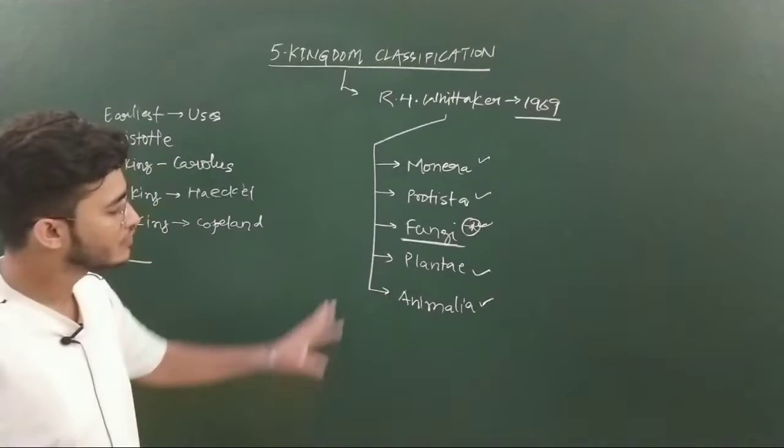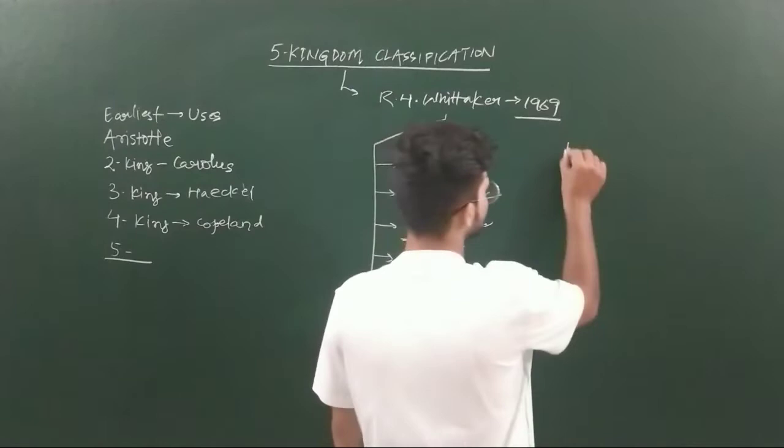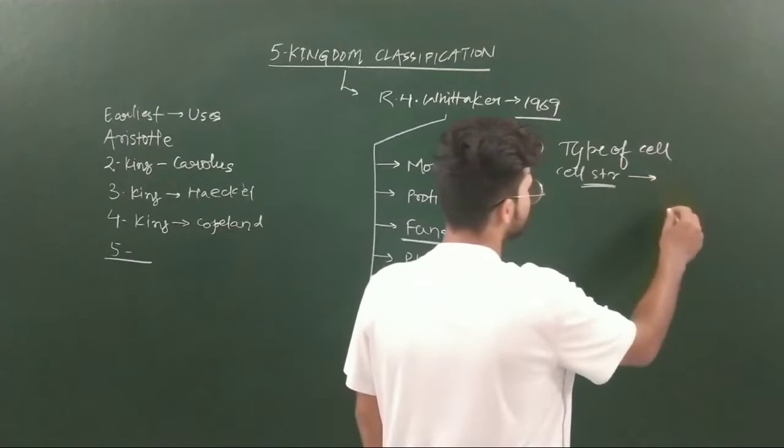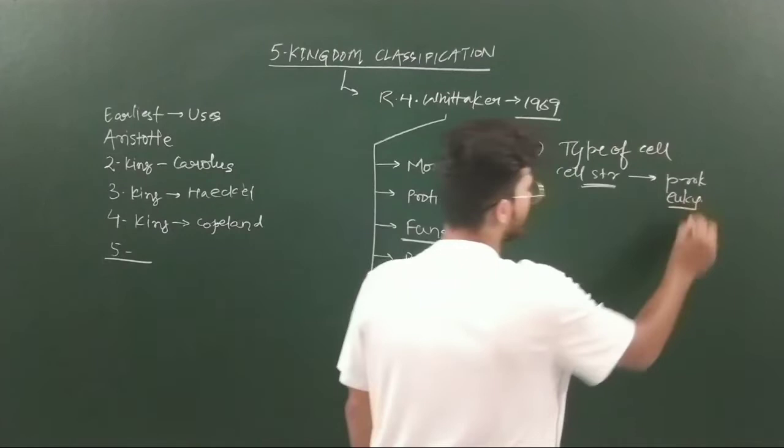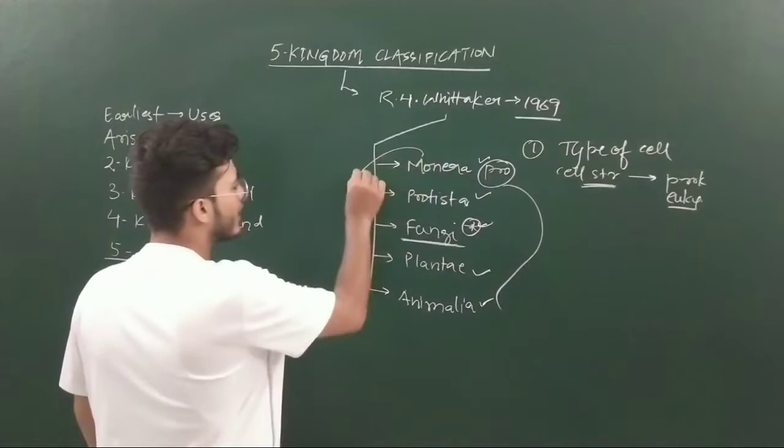The very first character is the type of cell or cellular structure. The cellular structure can be prokaryotic or eukaryotic. Monera were prokaryotes, and all the rest were eukaryotes.